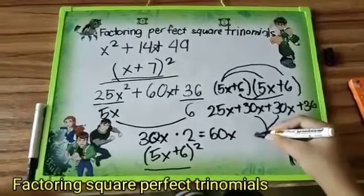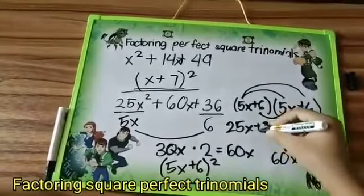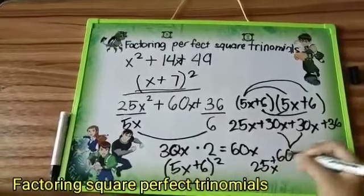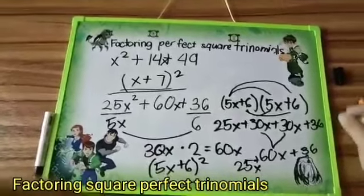So the answer is 60x, and we'll just bring down the 25x squared and the 36.